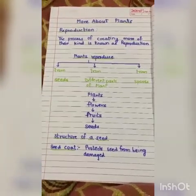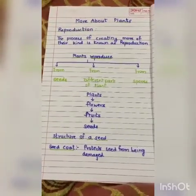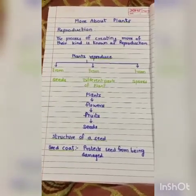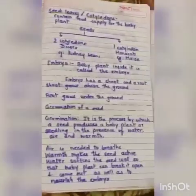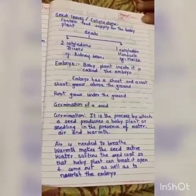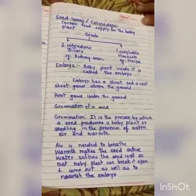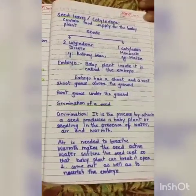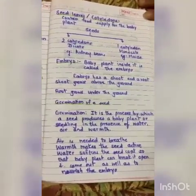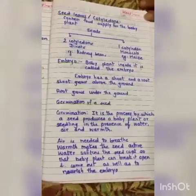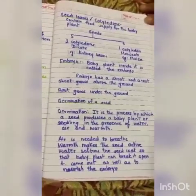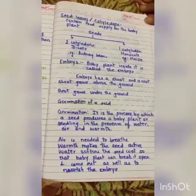Then we have seen the structure of a seed. A seed is mainly made up of a seed coat, which protects it from damage, and seed leaves called cotyledons, which contain food supply for the baby plant. Seeds are of two types: dicots, which have two cotyledons — for example, kidney beans — and monocots, which have one cotyledon — for example, maize.